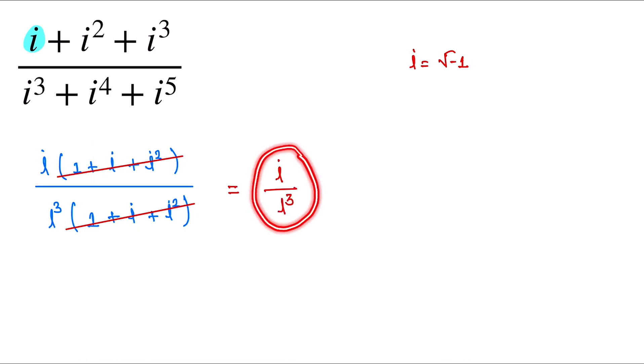Now here we use our exponent rule, power rule. When the base is equal, we subtract the power. So here is 1 by i to the 3 minus 1, and this one is equal to 1 by i squared.